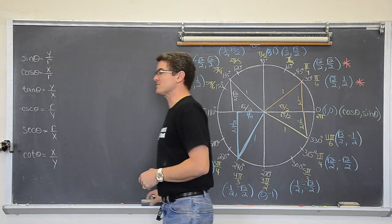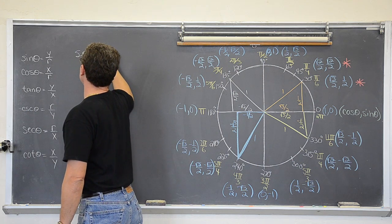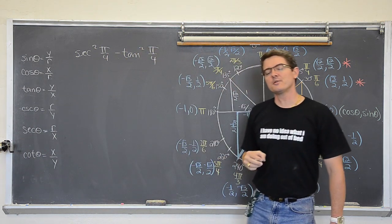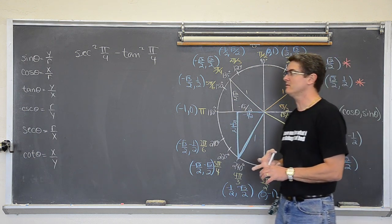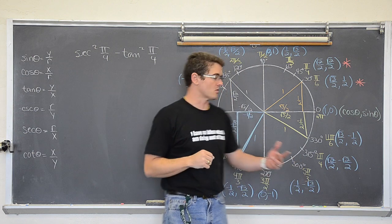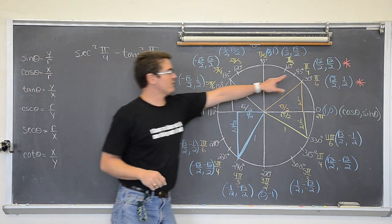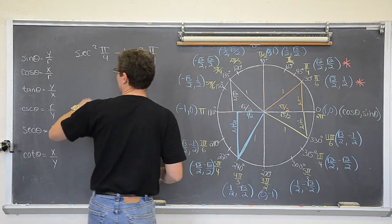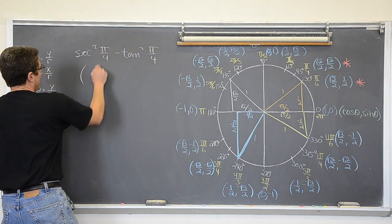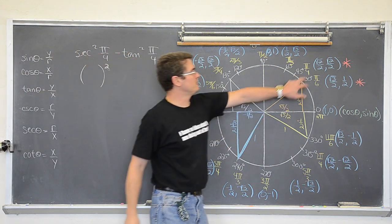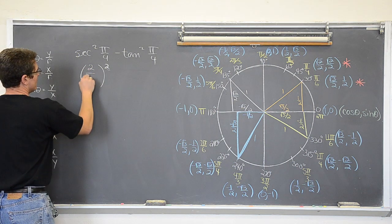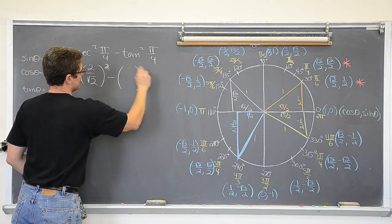Let's do something that is on the unit circle — the secant squared of pi over 4 minus tangent squared of pi over 4. If you know the three Pythagorean identities you might already know the answer. But let's evaluate this using the pi over 4 radian value from the unit circle. Pi over 4 is 45 degrees, and secant is the reciprocal of cosine. At pi over 4, the cosine value is the square root of 2 over 2, so the secant is 2 over the square root of 2.